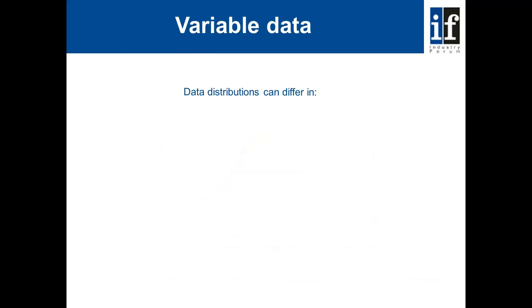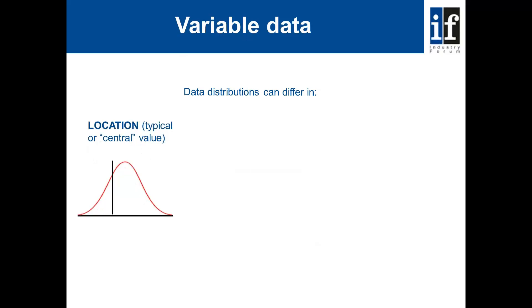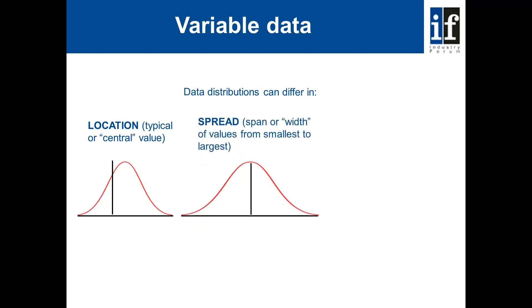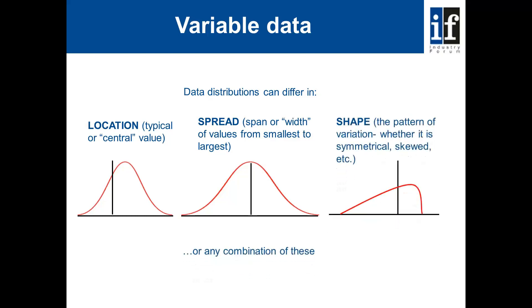When we consider variable data, we can have variation in three categories. The first category is location — the distribution curve is not centered on the target value. The second is spread — the width of the spread seems to be excessive. And finally, we can have shape — a skewed distribution because it's no longer a nice symmetrical curve. In real life, we can have any combination of these.